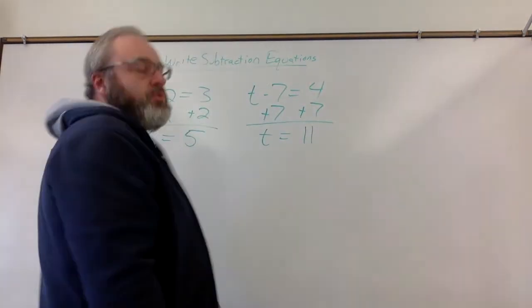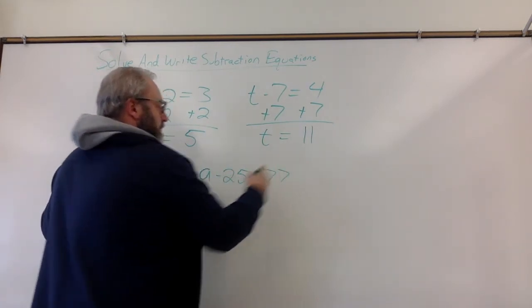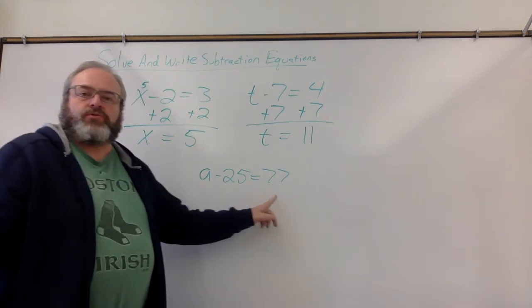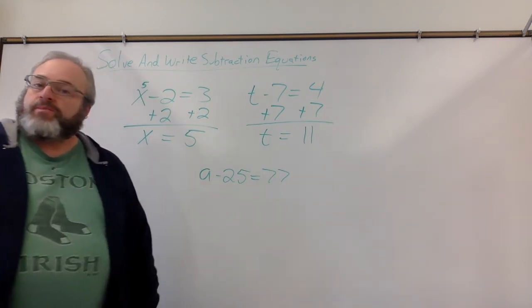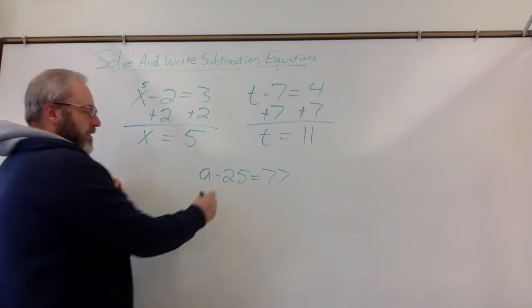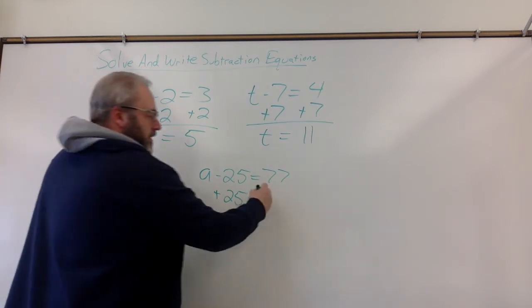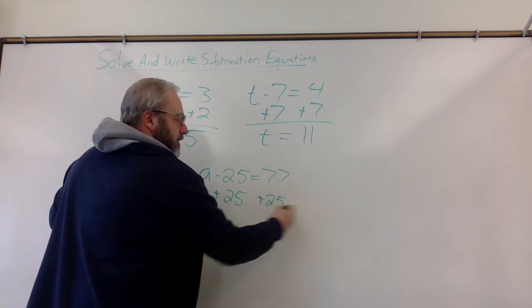Now, sometimes the numbers are a little bigger. a minus 25 equals 77. Just because the numbers are bigger doesn't mean you do anything different. So on this one, I'm going to add 25 because that's the opposite of subtracting 25.